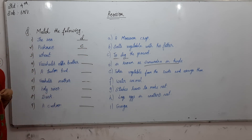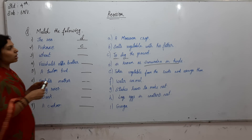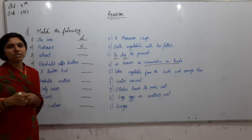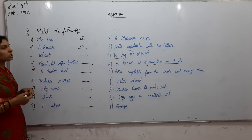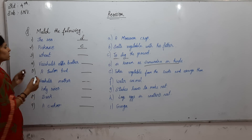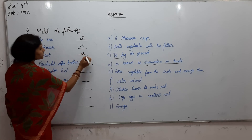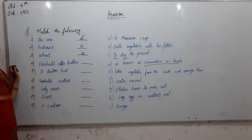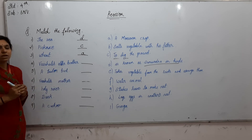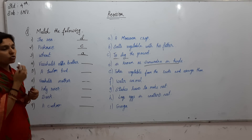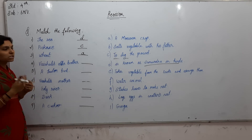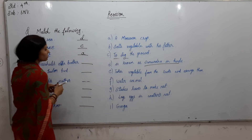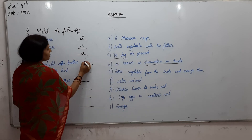Wheat — wheat is a monsoon crop; farmers grow wheat in the monsoon season, so the answer is Option A. Vesali's elder brother — Vesali's elder brother used to go with his father and sell vegetables, so 'sells vegetables with his father' — Option B.